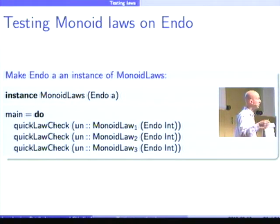To test Endo, the Endo instance of MonoidLaws, what you can now do is write instance MonoidLaws Endo. And then you can define this expression I gave before. QuickLawCheck these three laws. They will give you, if your instance is fine, they will check to OK.